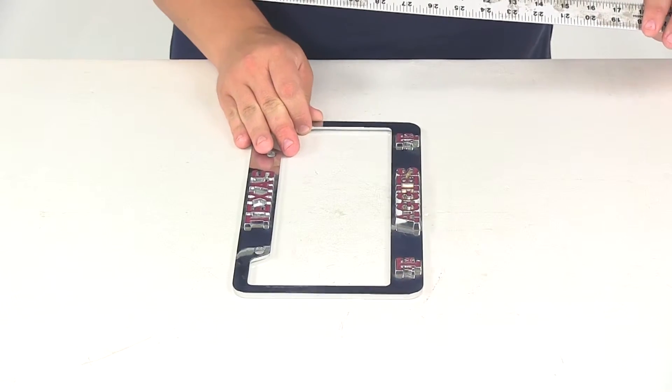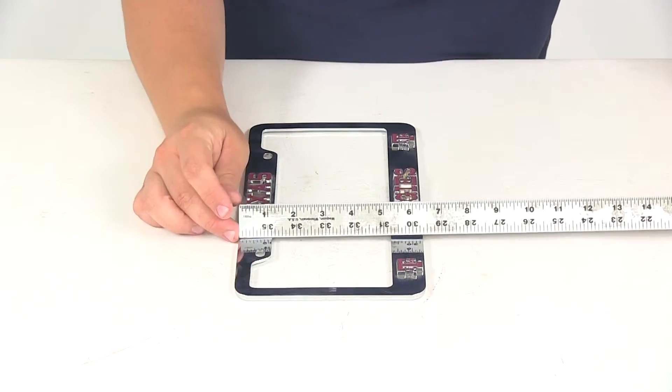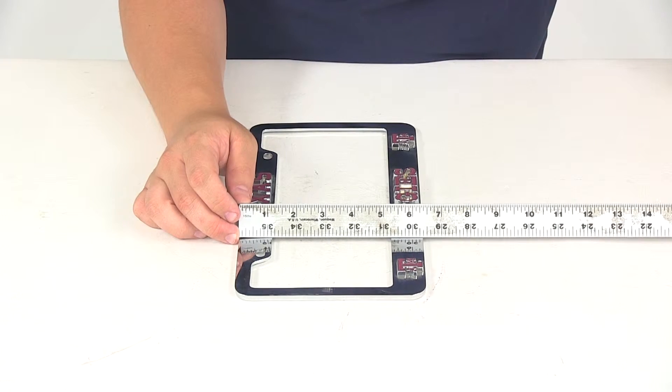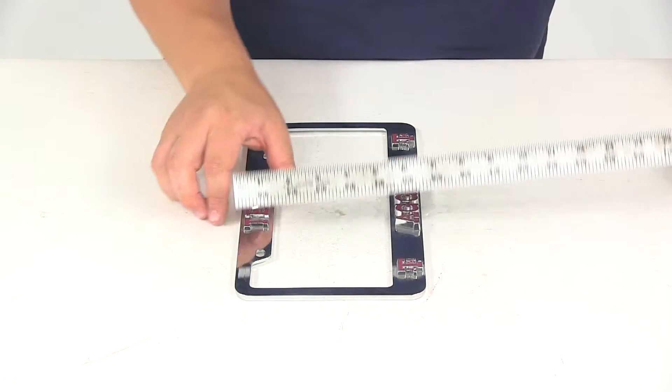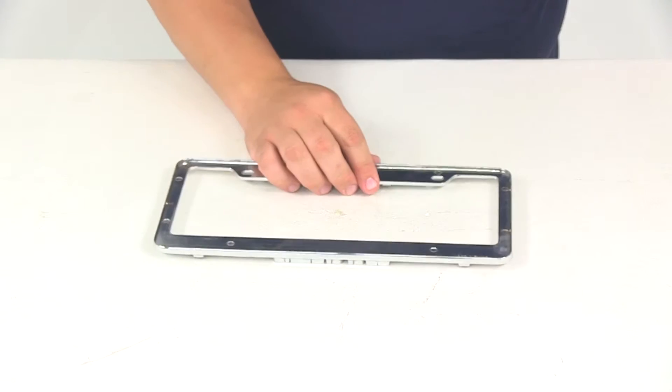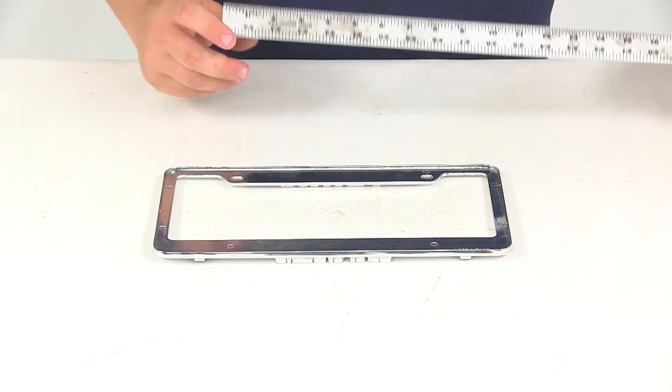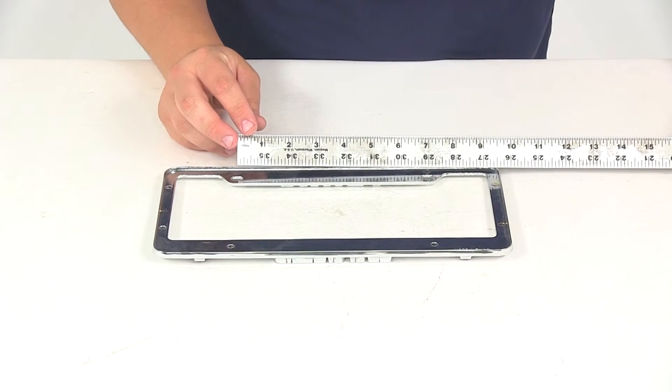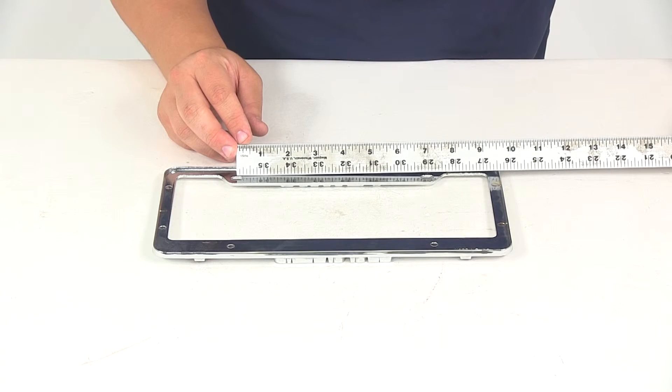Measuring the overall width outside edge to outside edge, that gives us 6 and 3/8ths of an inch. The distance between the mounting holes center on center is 6 and 15/16ths of an inch.